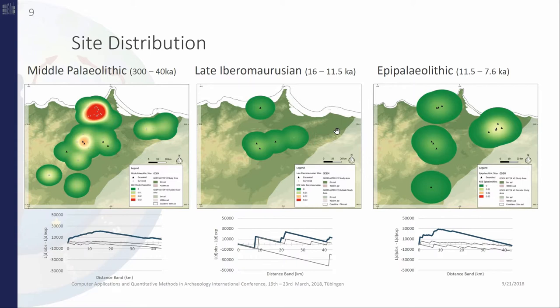In the Ibero-Maurusian, there are very few sites located mostly in the inland. They're also farther away from each other than the inland sites were in the Middle Paleolithic.